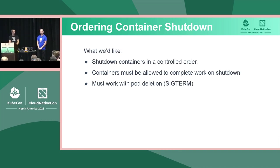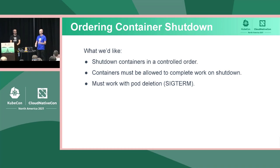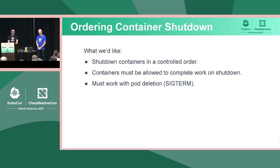The other thing we need is ordered container shutdown — shutting down containers in a specific controlled order, stopping container B before container A. When they shut down, they need to do graceful termination: clean up, flush buffers, that kind of thing. That shutdown needs to work with standard Kubernetes shutdown. Kubernetes shuts down a pod by sending SIGTERM to the root process, then 30 seconds — configurable — followed by SIGKILL, a hard shutdown. So you need to work nicely with SIGTERM.